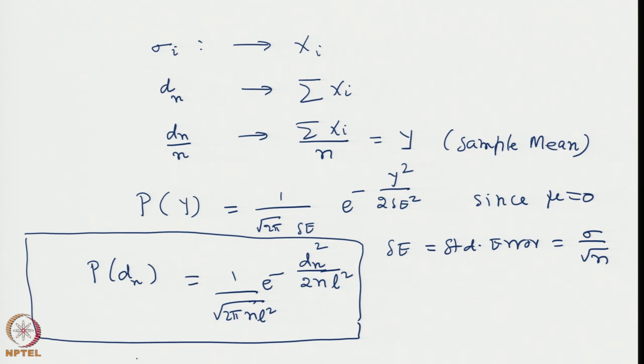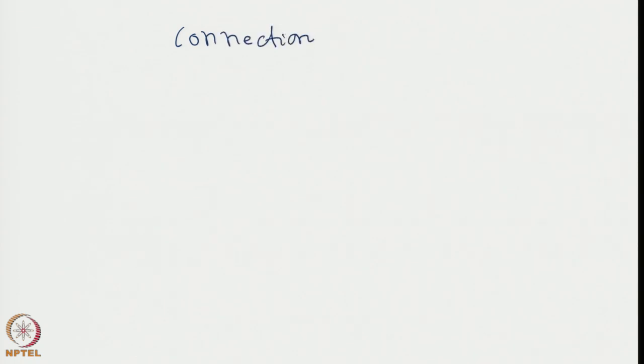Without doing an explicit detailed study of the random walk phenomenon, by mapping the problem of a stochastically marching process to a statistical process, we arrive at the details of the probability distribution that the person will be at a distance d_n after n steps, and how this probability distribution changes with increasing number of steps. There is a very deep physical connection of this random walk to the classical diffusion problem, such as that of a Brownian particle.